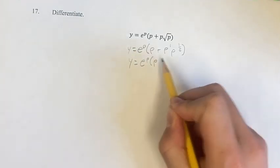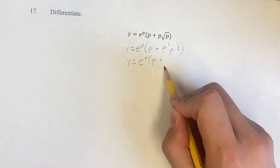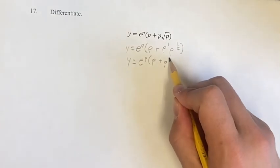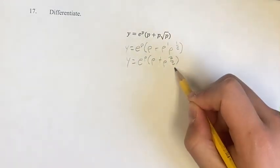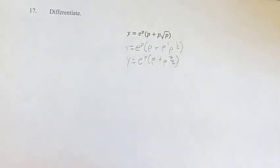And one more step, if you're multiplying two terms that have the same base, you can add their exponents. So this is p times p to the one-plus-one-half is three-halves. I just did this because it's going to be easier now that we have a power function here to determine the derivative.